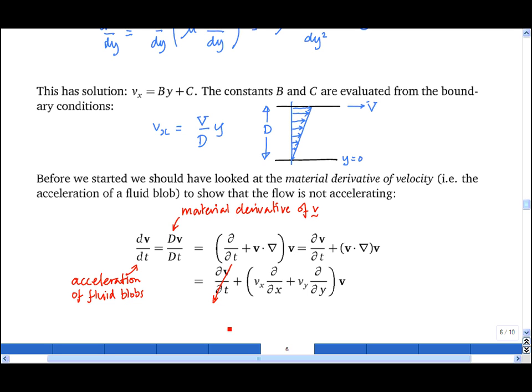we see that partial dv by dt is equal to zero because the flow is steady. Any d by dx term except for pressure is zero because nothing except pressure changes in the x direction. And v_y is zero throughout. And therefore, we see that the fluid is not accelerating anywhere. And that means that we were justified to consider the forces around the control volume and set the net force to zero.